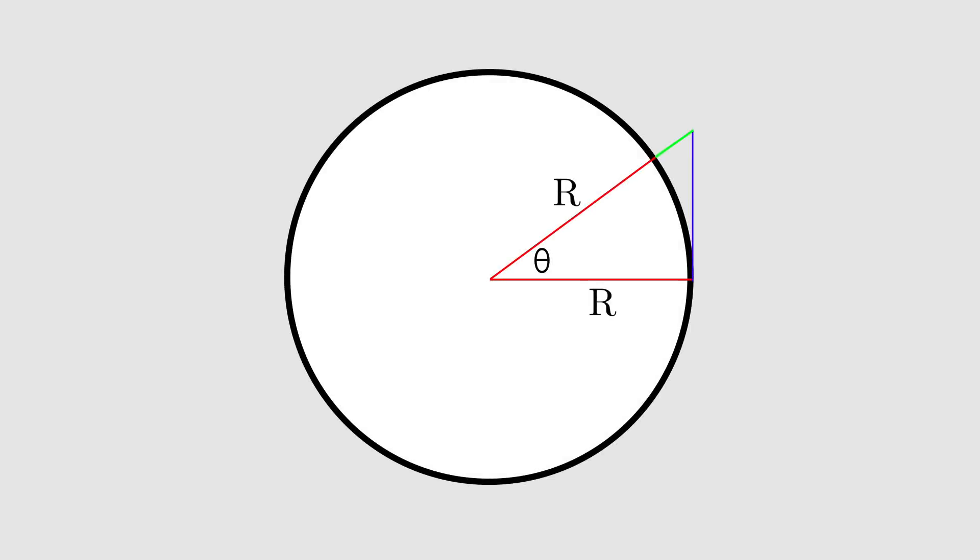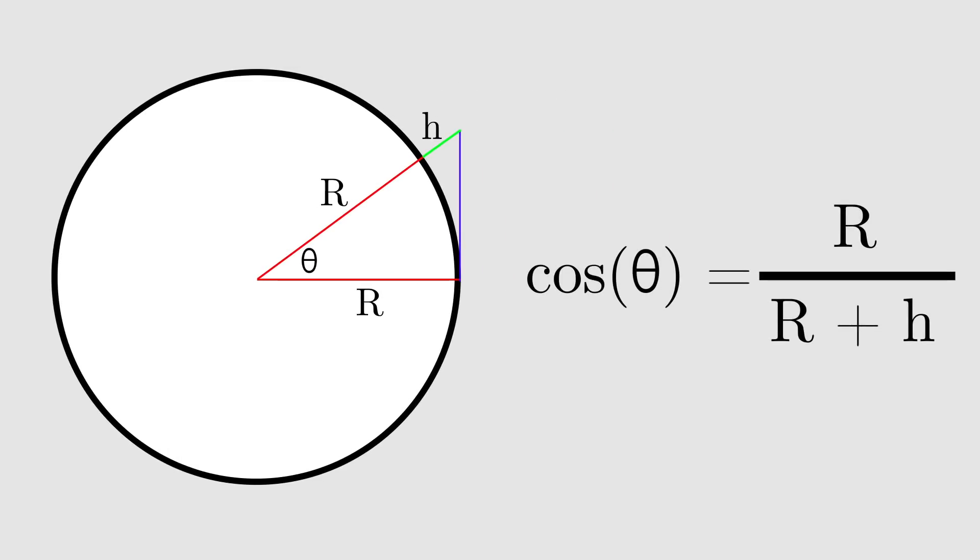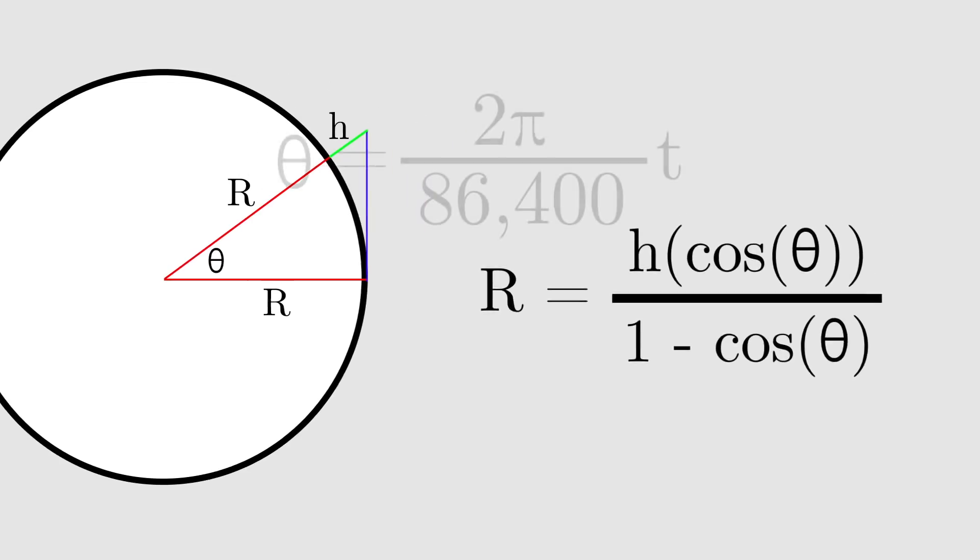Now if the radius of the Earth is r, and the change in height is h, the figure shows that cosine of theta equals r over r plus h. This can be algebraically rearranged to produce this formula for r in terms of theta.